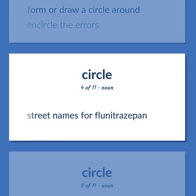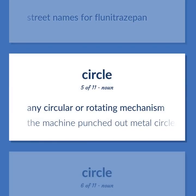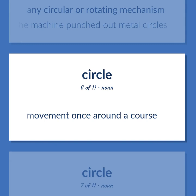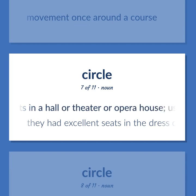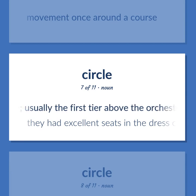Street names for flunitrazepam. Any circular or rotating mechanism. The machine punched out metal circles. Movement once around a course. A curved section or tier of seats in a hall, theater, or opera house, usually the first tier above the orchestra.